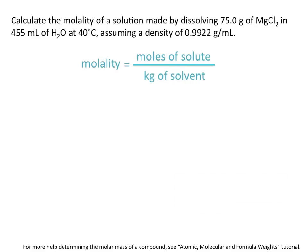Calculate the molality of a solution made by dissolving 75 grams of magnesium chloride in 455 milliliters of H₂O at 40 degrees Celsius, assuming a density of water of 0.9922 grams per milliliter. We remember that molality is equal to moles of solute per kilogram of solvent. We don't have either of these values right now, but we know that 75 grams of solute is dissolved in 455 milliliters of H₂O. So we need to convert 75 grams of magnesium chloride to moles of magnesium chloride, and 455 milliliters of H₂O to kilograms of H₂O.